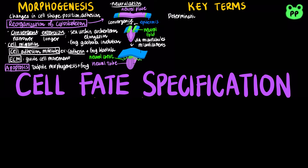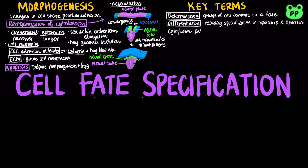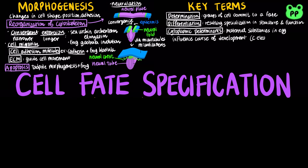Determination or specification means that a group of cells is committing to a fate, and differentiation refers to the resulting specialization in structure and function. Cytoplasmic determinants are maternal substances in the egg that influence the course of early development, such as P granules in C. elegans.